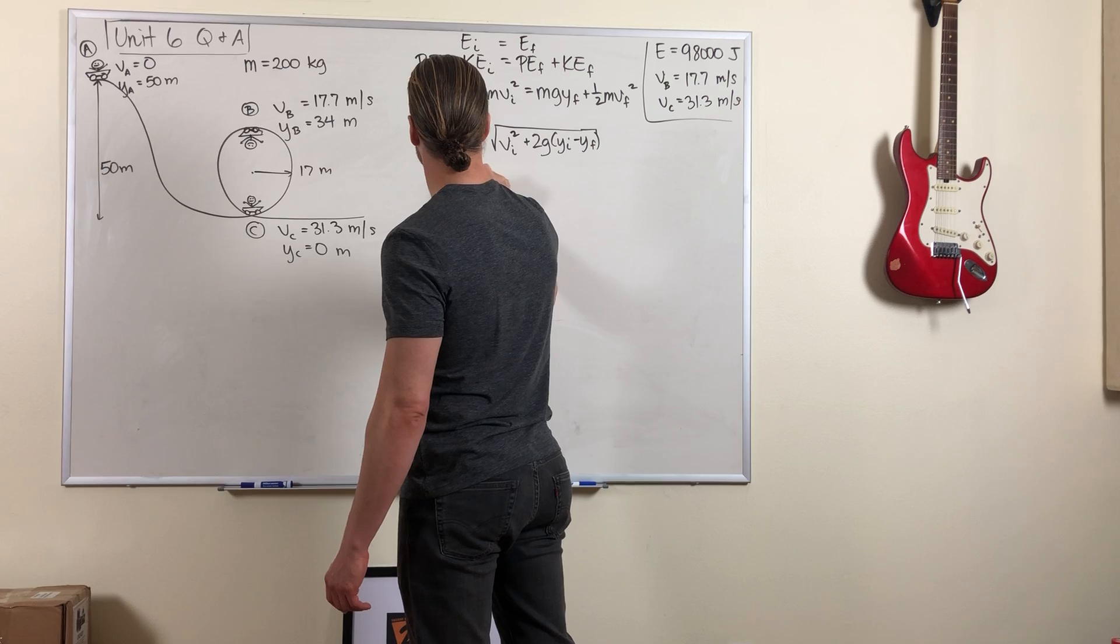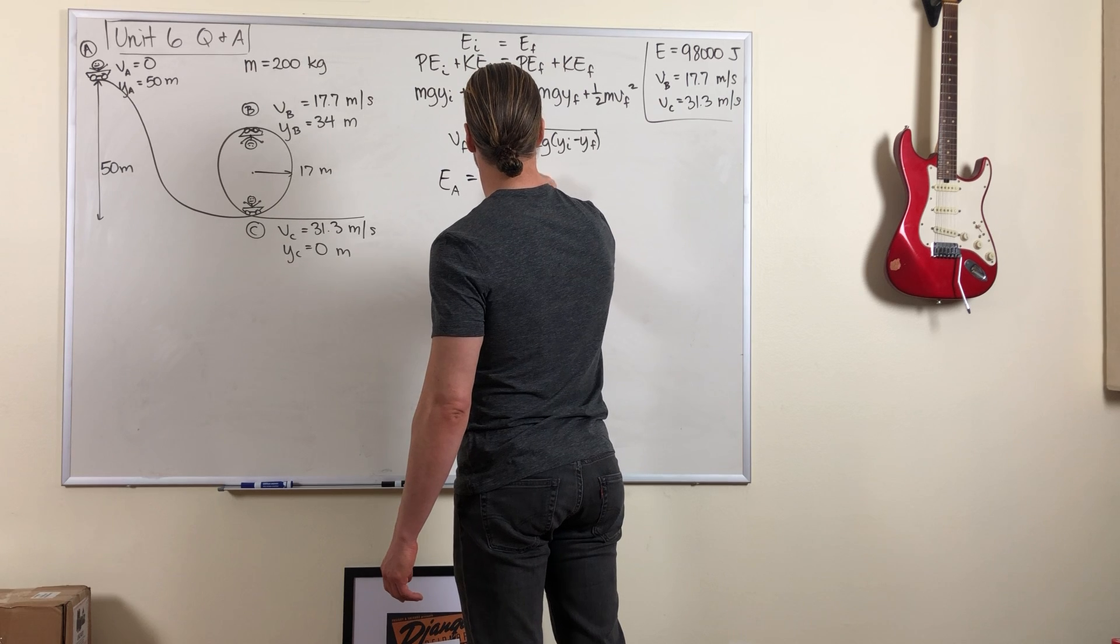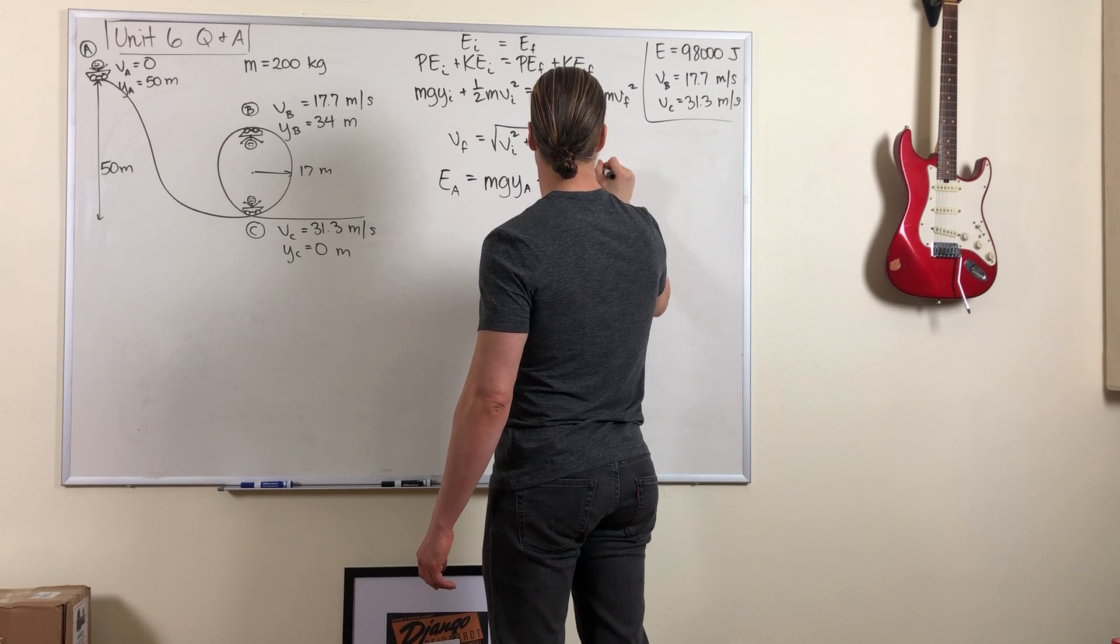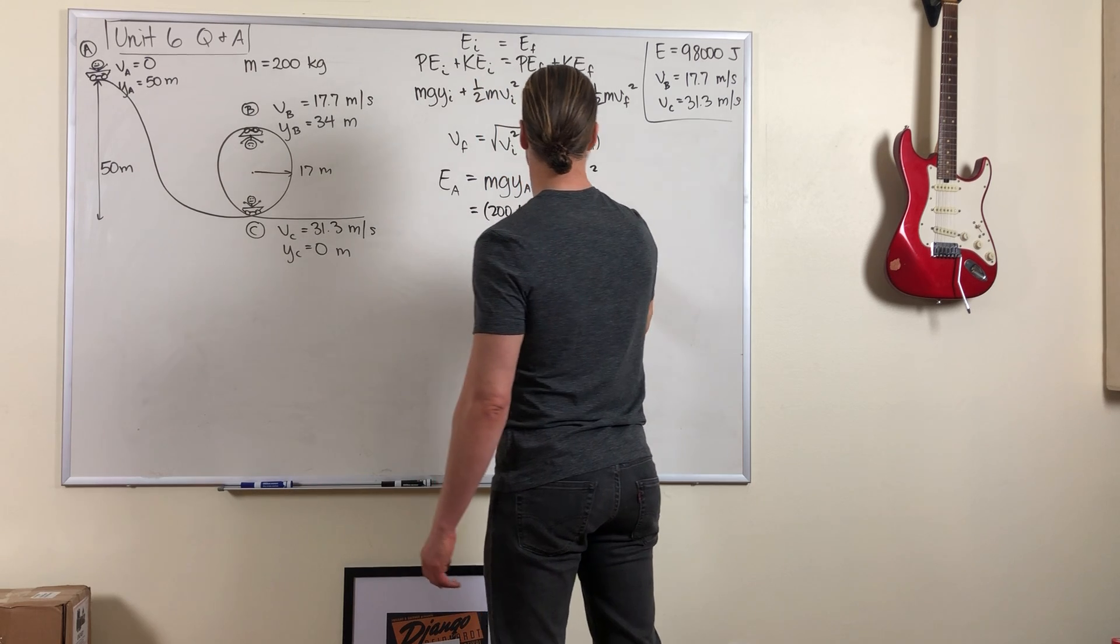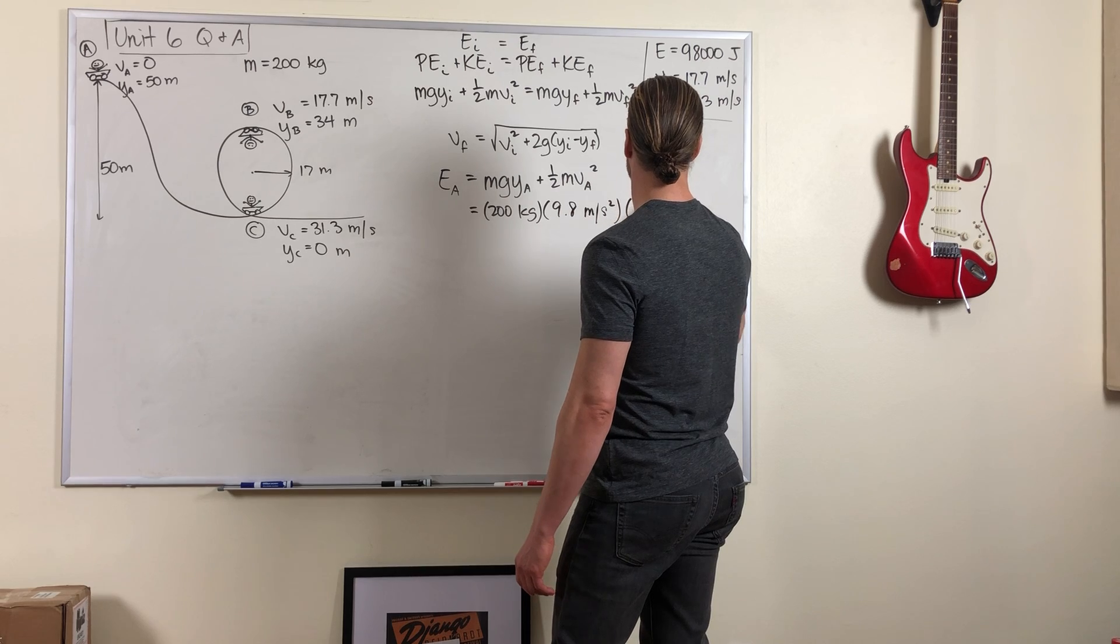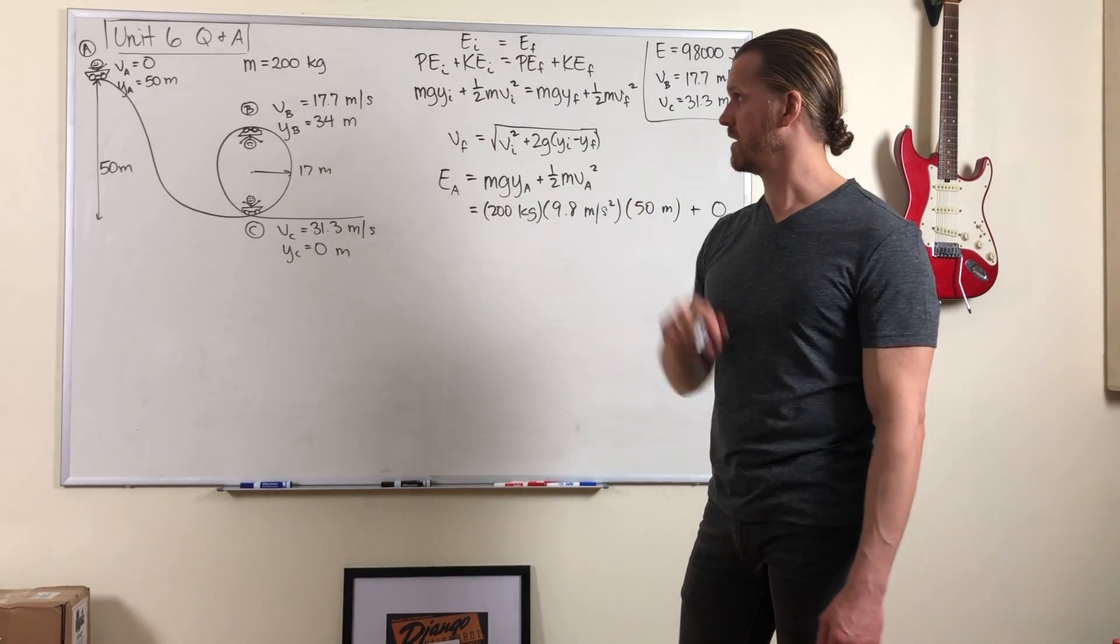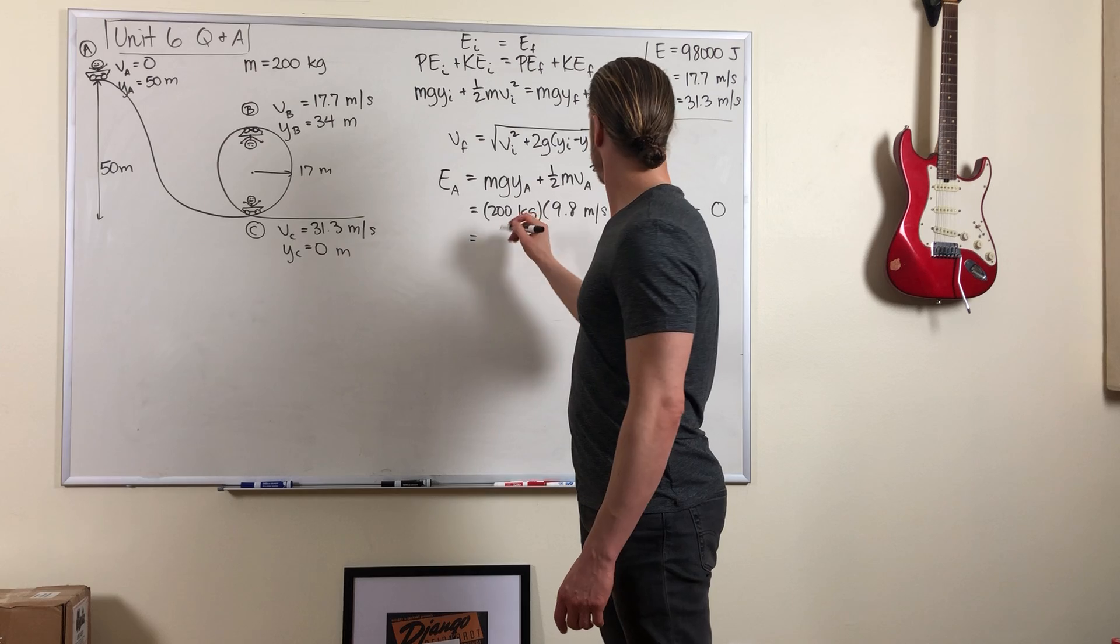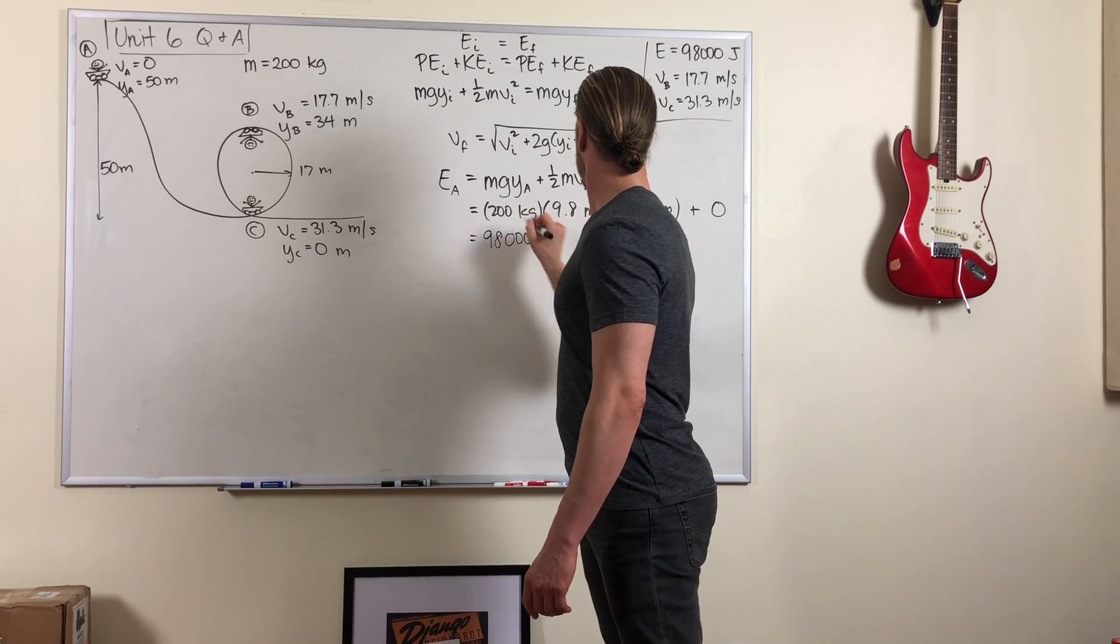That means that the total mechanical energy at point A would be MGY_A plus one half MV_A squared, which is 200 kilograms times 9.8 meters per second squared times 50 meters plus zero because there's no speed at the top of that ramp. When you plug all that in, you get 98,000 joules.